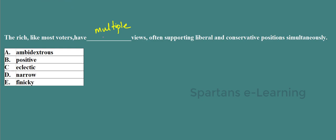Looking at options: 'ambidextrous' means equally skillful with both hands — out of context. 'Positive views' — we need multiple, so wrong. 'Narrow' — wrong. 'Finicky' means very particular about small details — out of context. The only option left is 'eclectic'. Eclectic means ideas or collections taken from multiple sources, which is very close in meaning to 'multiple.' So eclectic is the answer.